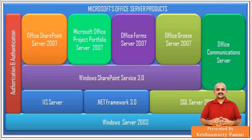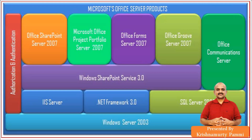It is basically an operating system suite. This program deals with test passes — specifically breadth test passes and depth test passes. Whenever a change is introduced in any vertical such as Office SharePoint, Microsoft Office Project Portfolio, or Office Forms, we need to do a depth test pass and a breadth test pass. Depth test pass verifies whether changes are working functionally within that specific vertical. Breadth test pass ensures the change does not impact the overall ecosystem.